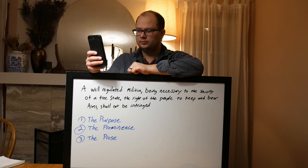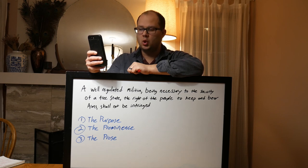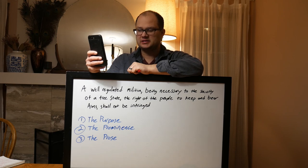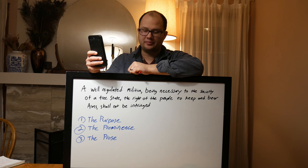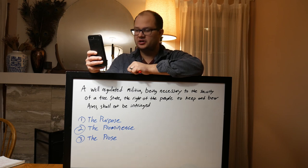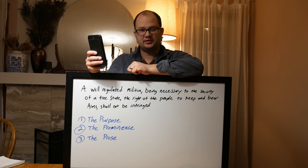Before a standing army can rule, the people must be disarmed, as they are in almost every country in Europe. The supreme power in America cannot enforce unjust laws by the sword, because the whole body of the people are armed and constitute a force superior to any band of regular troops. Noah Webster, an examination of the leading principles of the federal constitution, October 10th, 1787.